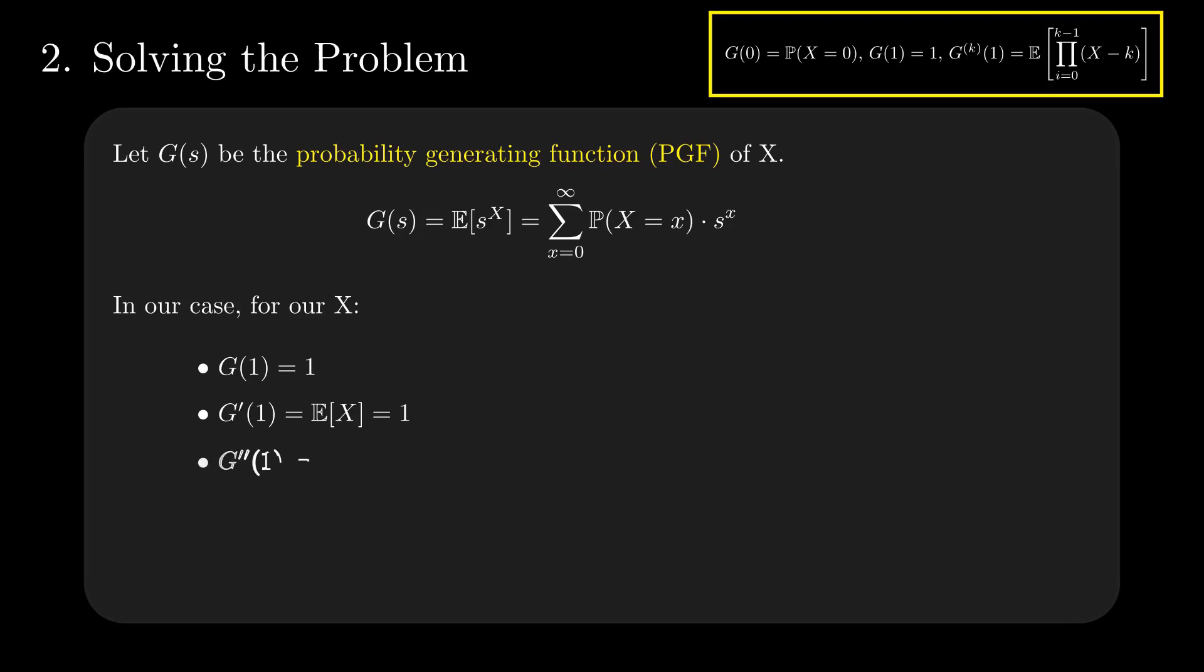The second derivative of G of 1 is expectation of X squared minus X, which expands linearly to get 1. And the third derivative of G of 1 is the expectation of X cube minus 3 times X squared plus 2X, which equals 1 as well, following the same logic as above.